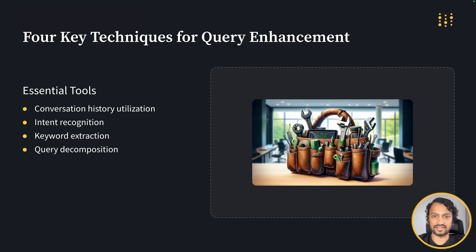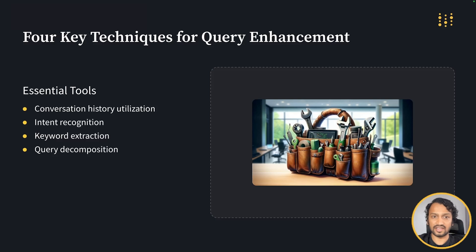First, we have conversation history utilization — this is like giving your system a good memory. Next, there is intent recognition, which helps your system understand the why behind a user's query. Then, we have keyword extraction, which helps extract and inject domain knowledge into your user queries. And finally, there is query decomposition, which breaks complex queries into manageable parts for your system to process. In OneBot, we've implemented all four of these techniques to ensure we are getting the most out of our system. As we explore each technique in detail, you'll see how they work together to improve your system's ability to understand and process user queries.